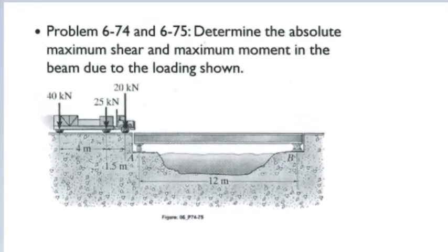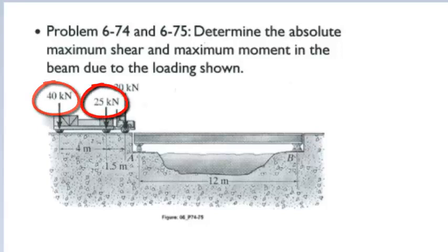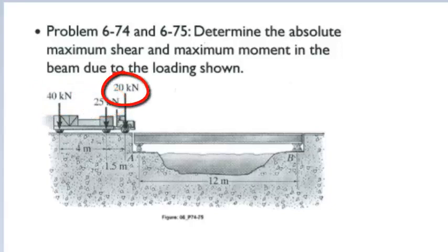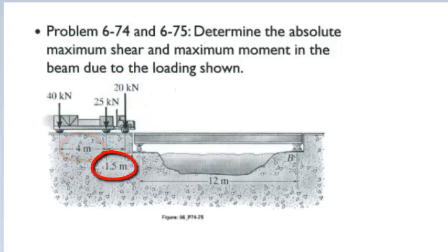In this example, we will determine the absolute maximum shear in the beam due to the truck loads. The truck has three axle loads of 40 kN, 25 kN, and 20 kN. The spacing between the first and second axle is 4 meters and the spacing between the second and third axle is 1.5 meters.